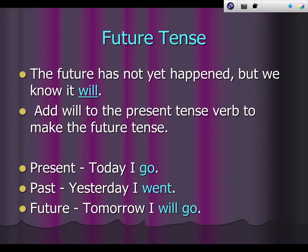Let's talk about the future tense. The future has not happened yet, but we know it will. Add will to the present tense verb to make the future tense. Today I go. Yesterday I went. Tomorrow I will go.